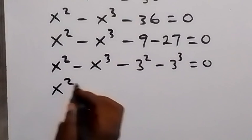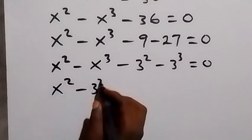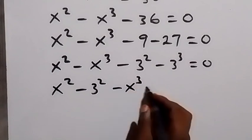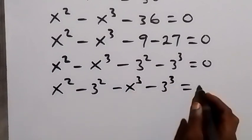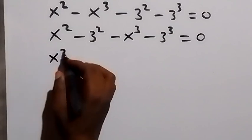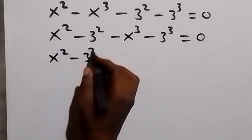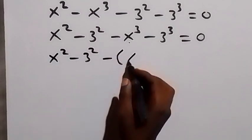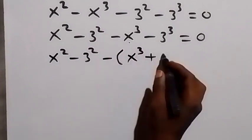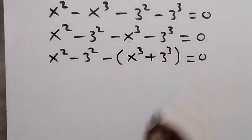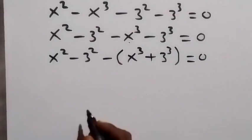Then let's bring the terms with squares together and the ones with cubes together. This becomes x squared minus 3 squared, then minus x cubed minus 3 cubed equals 0. From here we can write this as x squared minus 3 squared, then factor minus out, giving minus into bracket x cubed plus 3 cubed, which equals 0.